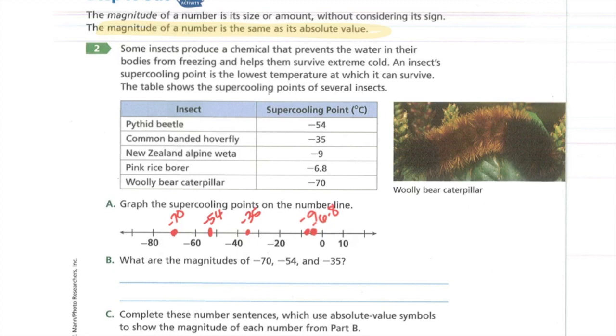B says, what are the magnitudes of negative 70, negative 54, and negative 35? Remember, magnitude is the same as absolute value. So negative 70's magnitude would be 70. Negative 54's magnitude would be 54. Negative 35's magnitude would be 35. Hopefully you're noticing a pattern of how to get that quickly.